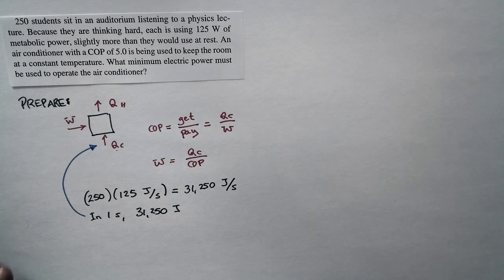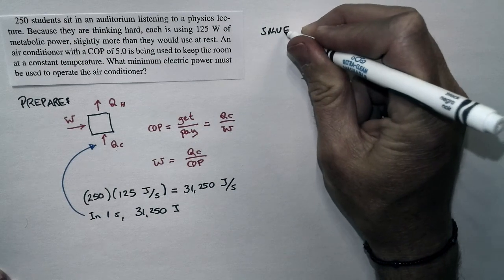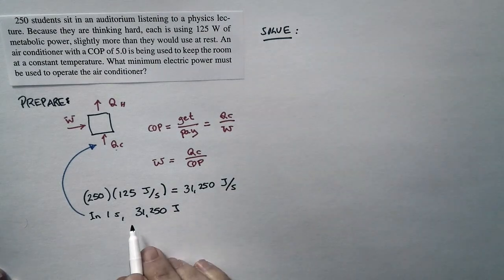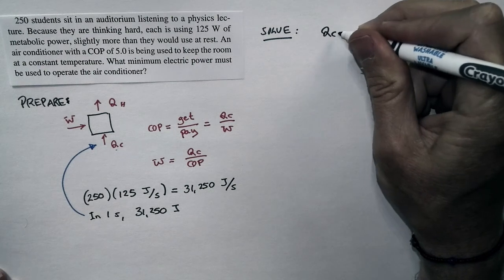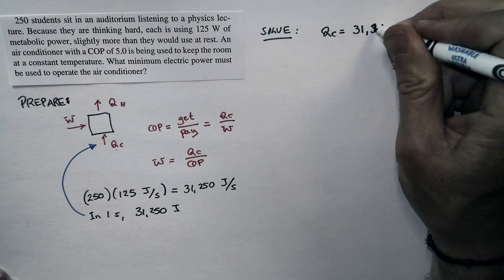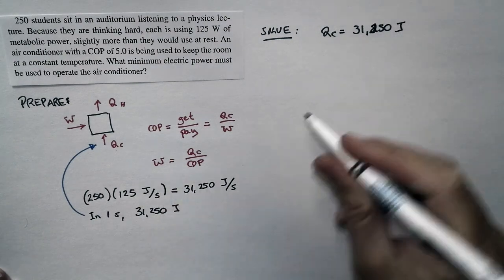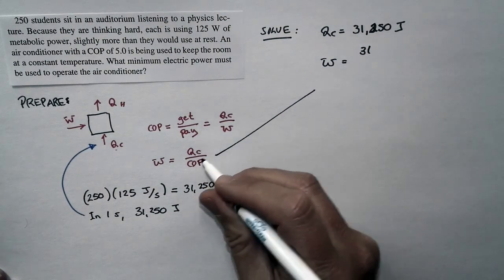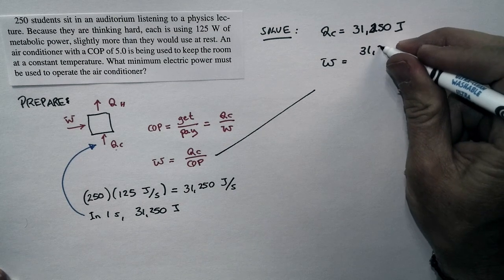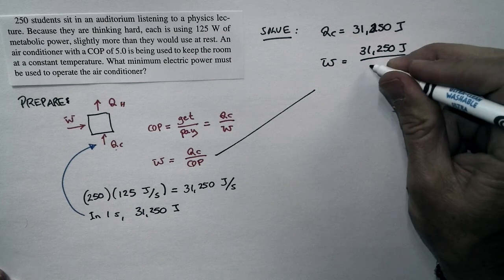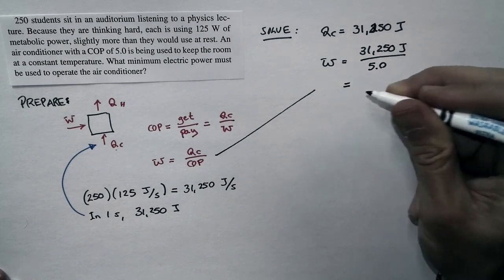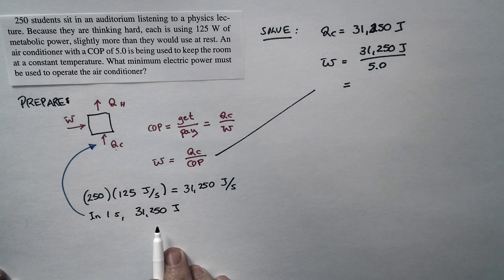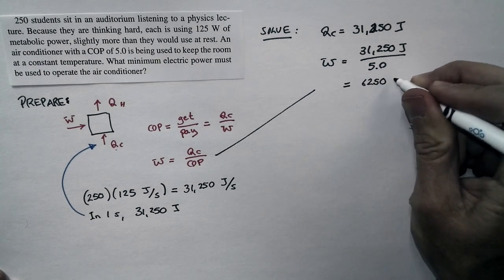With that preparation in place, we're ready to move on to a solution. In one second, the students are dumping this much heat into the room. That's the heat we have to get rid of, so that's QC. QC is 31,250 joules, and we know that the work that has to be done to exhaust that is QC divided by the coefficient of performance. QC is 31,250 joules, the coefficient of performance is 5.0, and so the work that has to be done in one second to exhaust this amount of heat is 6,250 joules.